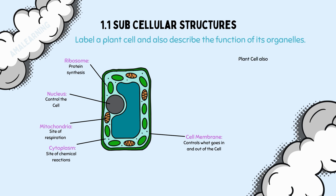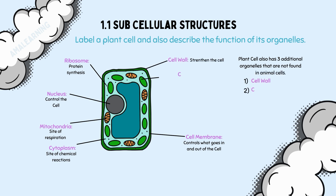The plant cell also has three additional organelles not found in animal cells. The cell wall, which strengthens the cell. The chloroplasts, where photosynthesis occurs — a very important topic that will be covered in more detail in topic 6. And finally, it has a vacuole, which contains the cell sap. The cell sap is a weak solution of salts and sugars.